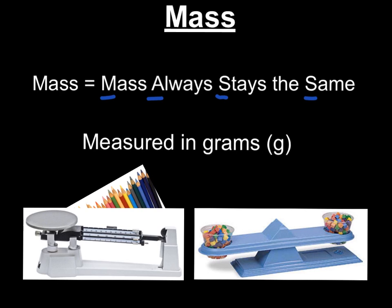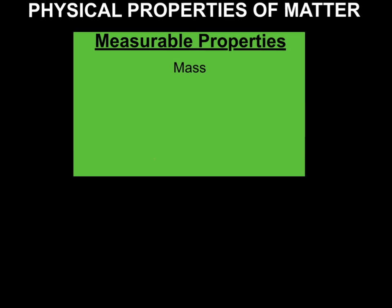So mass is measured using balances. This is probably what you were used to when you were younger to find mass. And now that you're older, we use triple beam balances. In your chart for measurable properties of matter, I need you to write mass. And I know this is shocking, spelling counts.